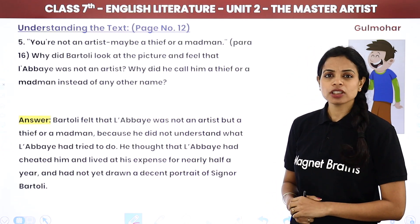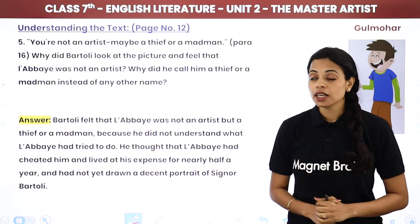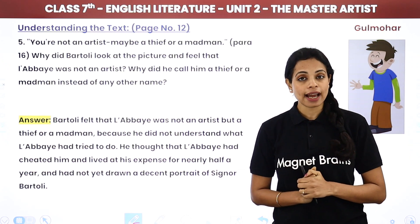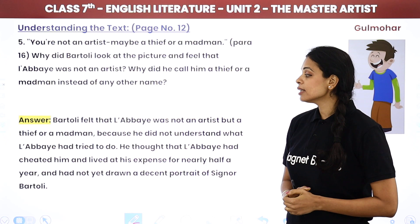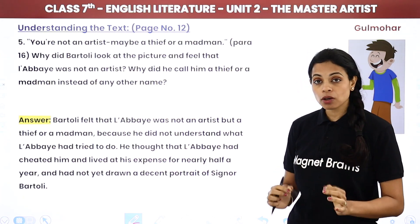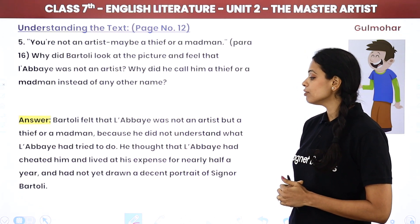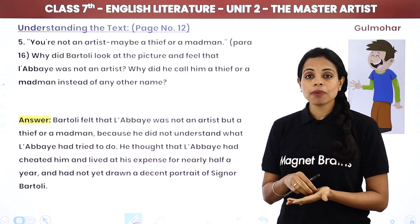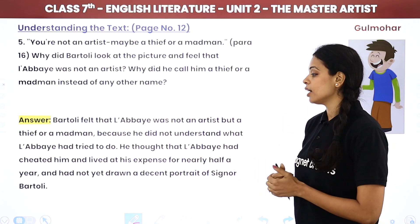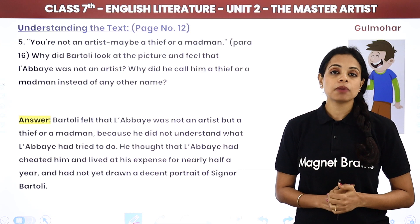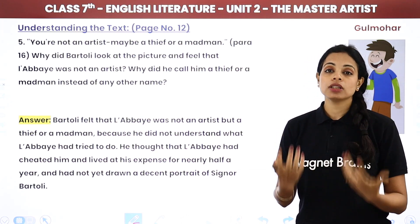The next question: 'You are not an artist — maybe a thief or a mad man.' Why did Bartoli feel Libai was not an artist, and why did he call him a thief or a mad man? Bartoli felt Libai was not an artist but a thief or a mad man because he did not understand what Libai had tried to do. He thought that Libai had cheated him and lived at his expense for nearly half a year without drawing a decent portrait of Sino Bartoli. That is why he called him a cheater or a mad man.